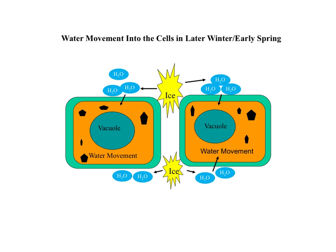As winter and cold temperatures begin to break and warmer temperatures arrive in late winter or early spring, the plant cells begin to rehydrate, breaking the acclimation state. As the water moves back into the cell from the intercellular spaces, normal cell functions resume. If damage had occurred to the plasma membrane through being punctured or ruptured, then the cell would be dead.